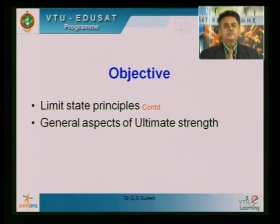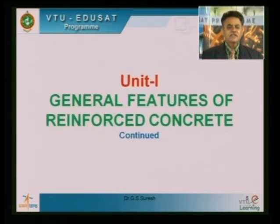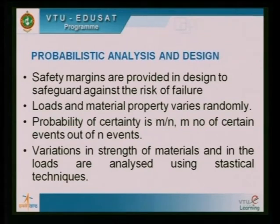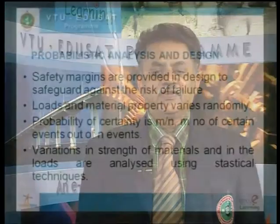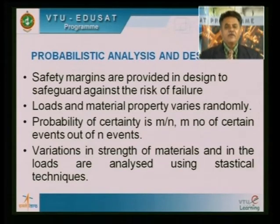Today's objective is to learn more about limit state design, then move to Unit 2 where we will learn general aspects of ultimate strength. Let us continue from the previous class. Safety margins are provided in the design to safeguard against the risk of failure. We find the collapse load, apply a suitable factor, and bring it down — that is the probabilistic method we use.